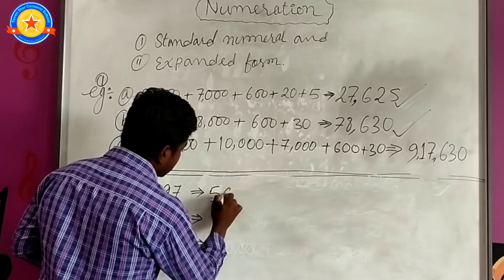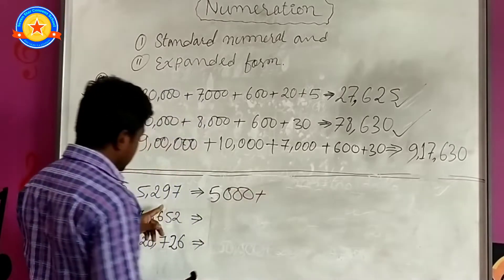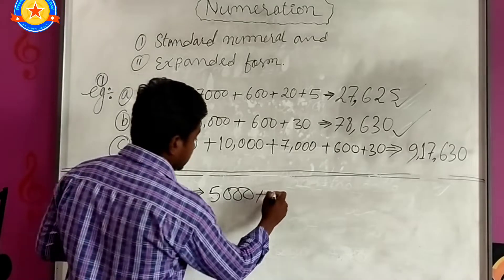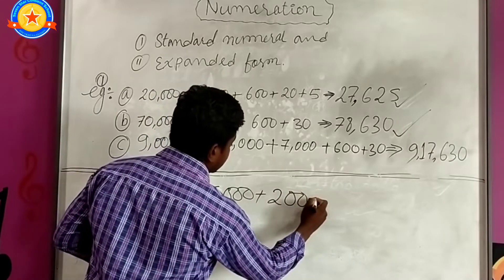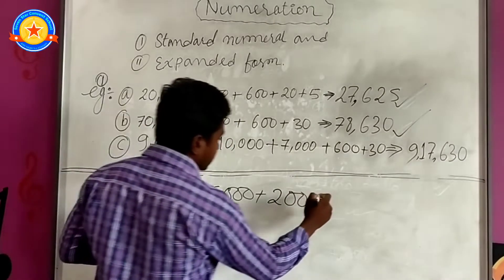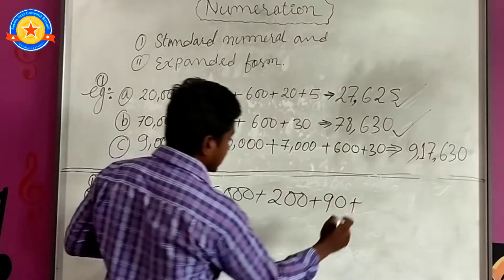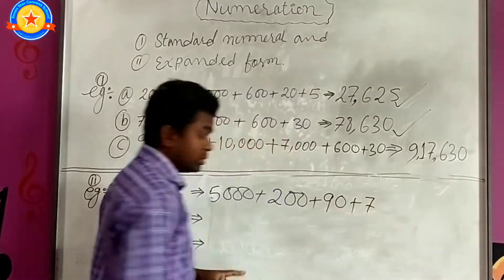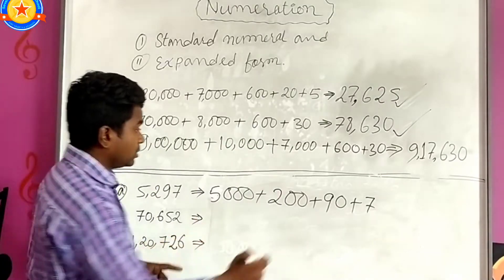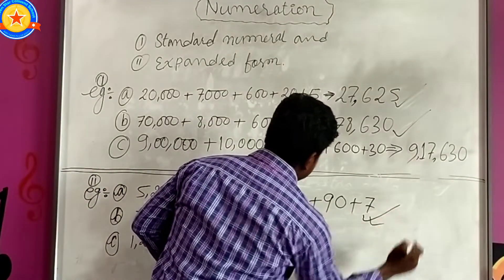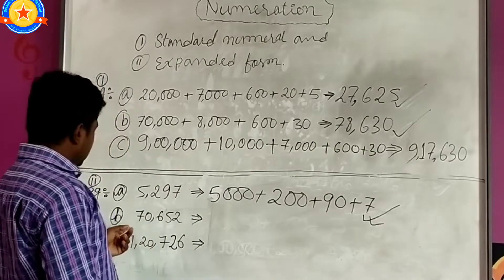5,000 plus we have here 200. 200 plus 97, so we have to write here 90 plus 7. This is the answer of expanded form.